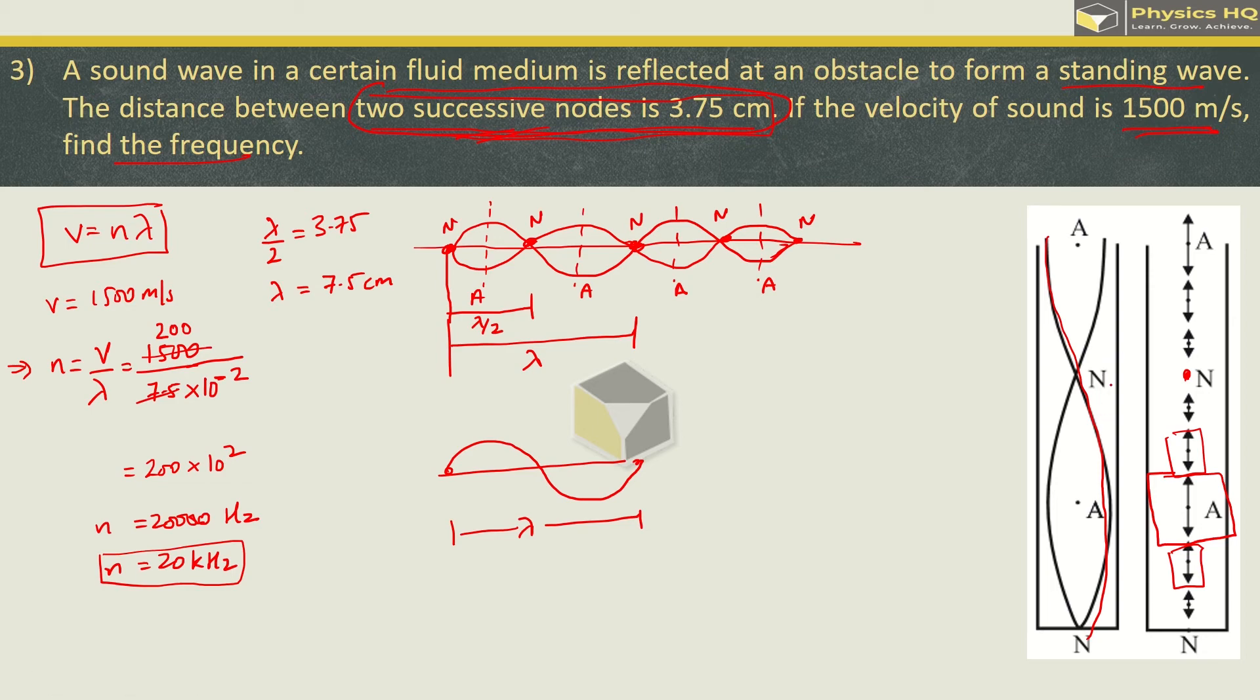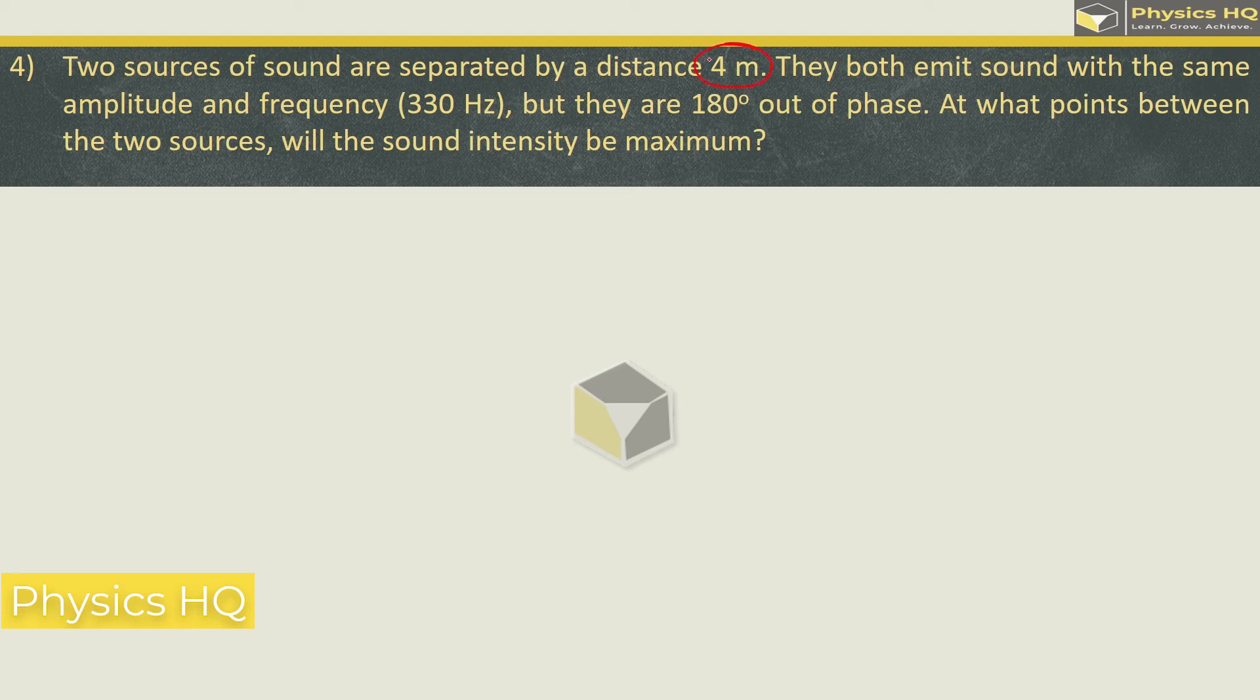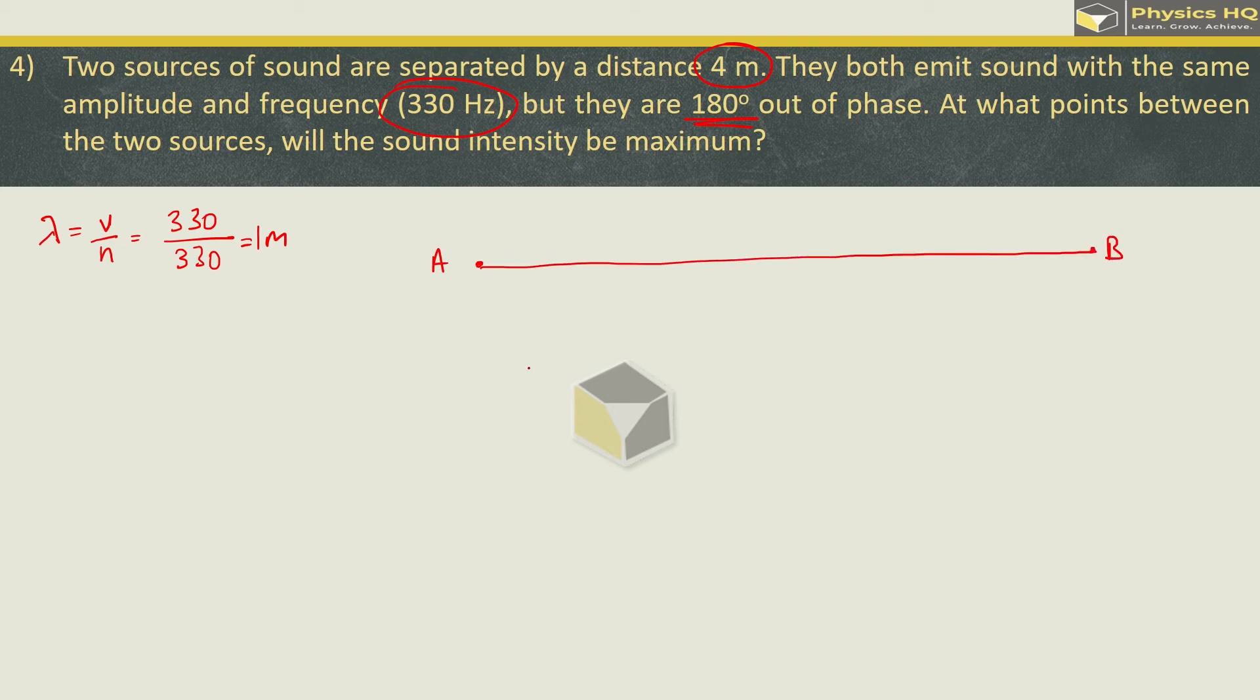Let us go ahead with the next sum. Two sound waves are separated by a distance of 4 meter. They both emit sound with the same amplitude and frequency which is 330 hertz. But they are 180 degree out of phase. At what points between the two sources will the sound intensity be maximum? First let's find wavelength. Wavelength is given by v by n. V velocity we can take as 330 meter per second and frequency is 330 hertz. So this gives us 1 meter. So if we take two points, point A and point B, where we have these two sources placed, the distance between these two points we have 4 meter given. If wavelength is 1 meter, meaning 4 waves will form.